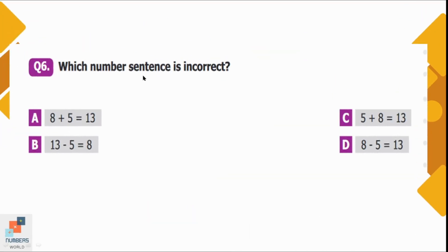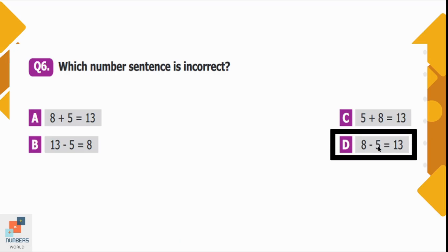Question number 6: Which number sentence is incorrect? Option A: 8 plus 5 equals 13 — true. Option B: 13 minus 5 equals 8 — correct. Option C: 5 plus 8 equals 13 — right. Option D: 8 minus 5 equals 13 — incorrect, because 8 minus 5 is 3, not 13. So option D is the incorrect statement.